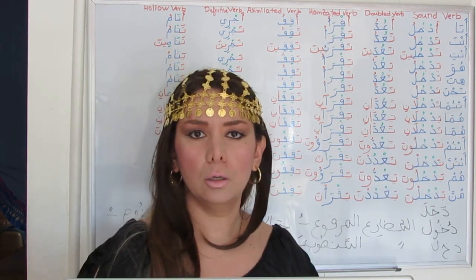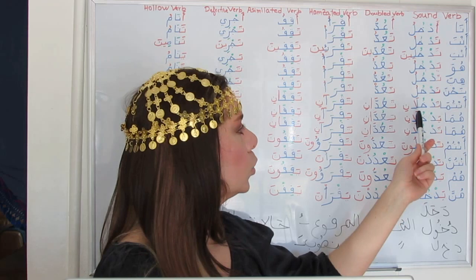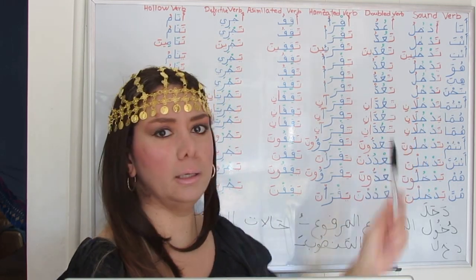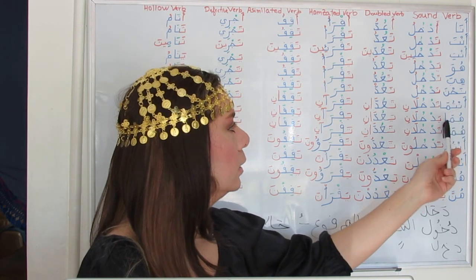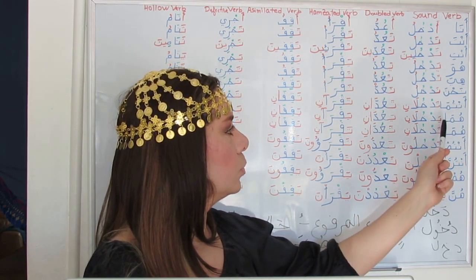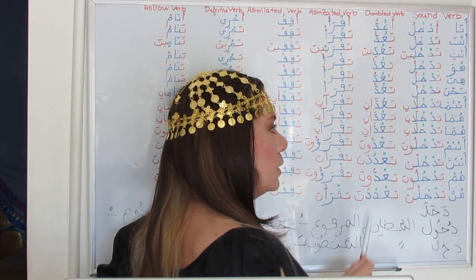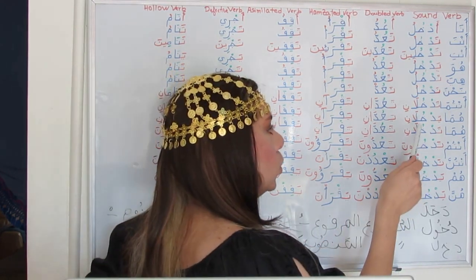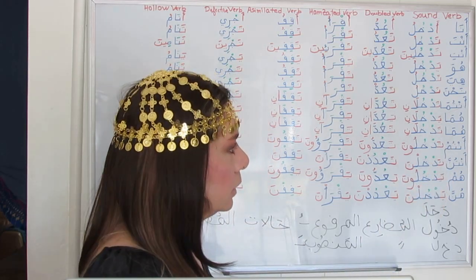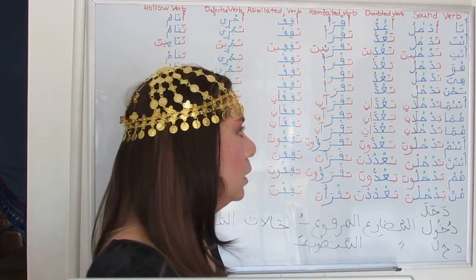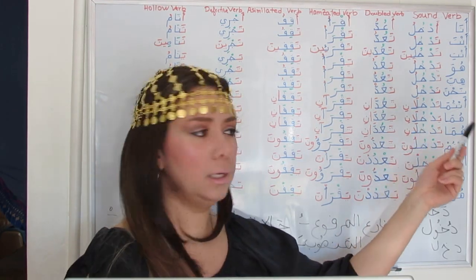Nahnu — we use the prefix 'nun' of nahnu: nadkhulu. Antuma tadkhulani — 'ta' as a prefix and 'ani' referring to the dual, both feminine and masculine for antuma. Huma yadkhulani — 'ya' as a prefix and 'ani.' Since we have a long vowel Alif, it is preceded by Fathah to match it. For huma feminine and antuma, they share the same form and you must specify the subject.